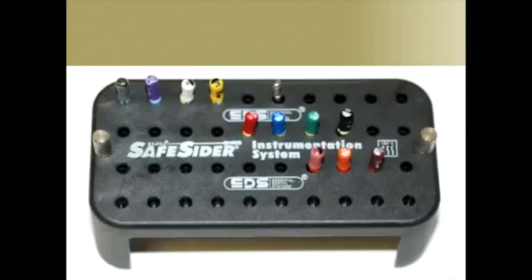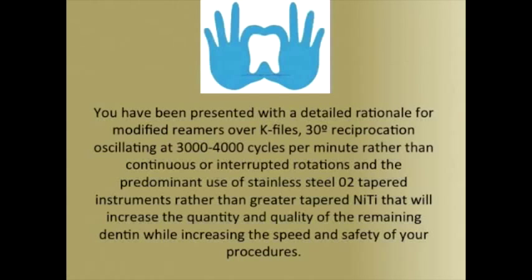Rather, here too, thin 0.2-tapered relieved stainless steel reamers would vigorously work the buccal and lingual extensions of these canals, creating spaces larger than themselves — with the end goal of producing a space that mirrors the original anatomy in larger form. You have been presented with a detailed rationale for modified reamers over K-files, 30-degree reciprocation oscillating at 3,000 to 4,000 cycles per minute rather than continuous or interrupted rotation, and the predominant use of stainless steel 0.2-tapered instruments rather than greater-tapered NiTi — all of which will increase the quantity and quality of remaining dentin while increasing the speed and safety of your procedures.